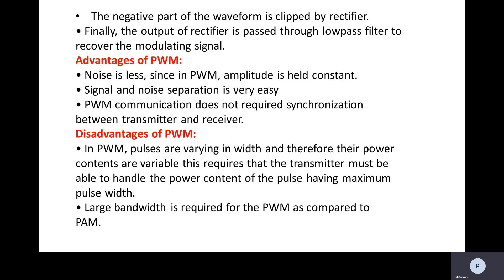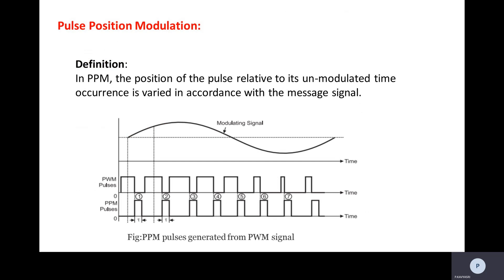PWM also has advantages and disadvantages. Advantages: noise is less because amplitude is constant in PWM; signal and noise separation is very easy; and PWM communication does not require synchronization between the transmitter and receiver. Disadvantages: pulses vary in width so power content is variable, requiring the transmitter to handle the power of the maximum pulse width. Also, a large bandwidth is required for PWM compared to PAM.